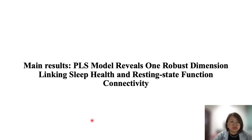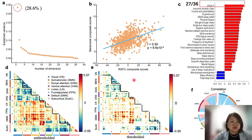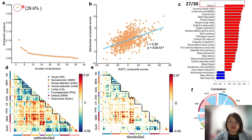The PLS analysis revealed one robust dimension linking sleep health and resting-state functional connectivity. As indicated in the figure, only the first latent variable survived permutation testing with FDR correction. This surviving dimension accounted for 28.6% of the resting-state functional connectivity and behavior covariance, and the 27 strongest correlations between participants' behavior measures and their behavior composite scores were presented in figure C.